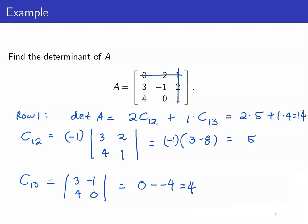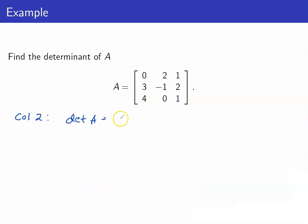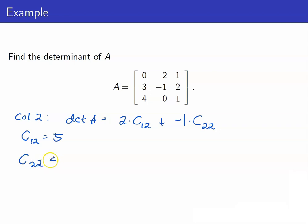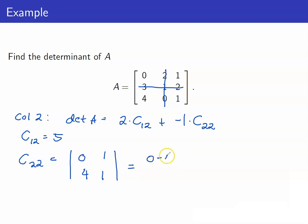Just to show that you get the same number regardless of which row or column you choose, let's compute the determinant using column 2. Using column 2: it's 2 times C12 plus negative 1 times C22. C12 is already 5. For C22: 2 plus 2 is even, so positive 1 times the determinant of entries 0, 1, 4, 1, giving 0 minus 4 equals negative 4. So the determinant equals 2 times 5 plus negative 1 times negative 4, which also gives 14.